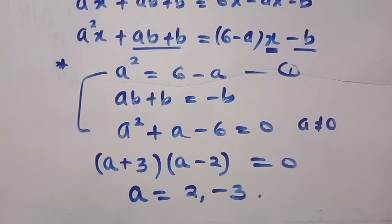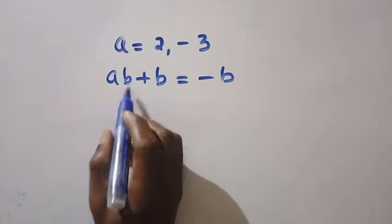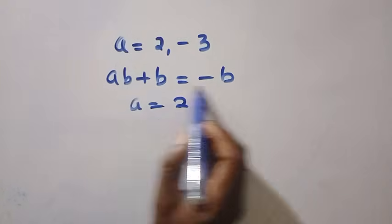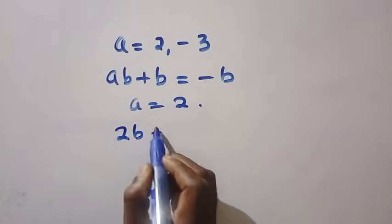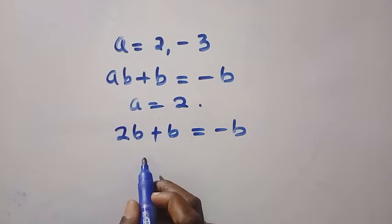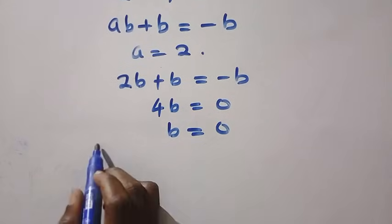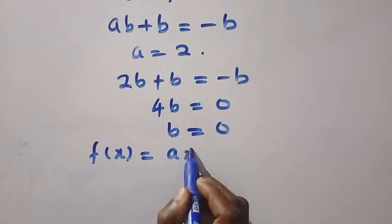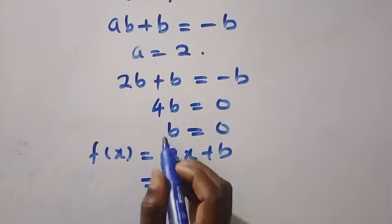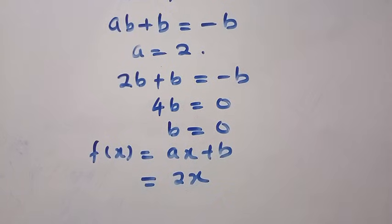We are going to get the value of b by substituting this into the second equation. Let's check for if a equals 2. For a equals 2, we substitute here and we have 2b plus b equals minus b. Here, everything becomes 4b equals 0, and then b here equals 0. If b equals 0, recalling from where we guess f of x equals ax plus b, as b equals 0 and a equals 2, we have f of x to be 2x. Here is the first equation for f of x.